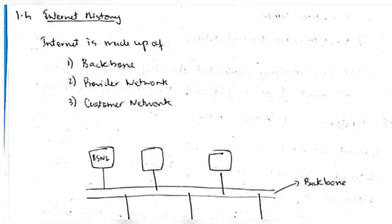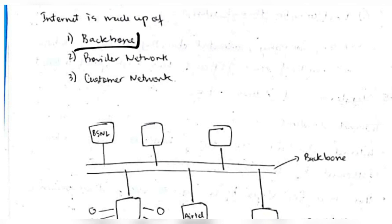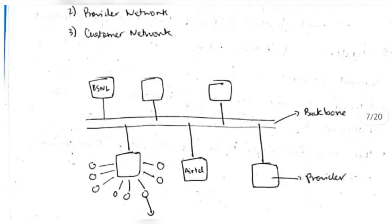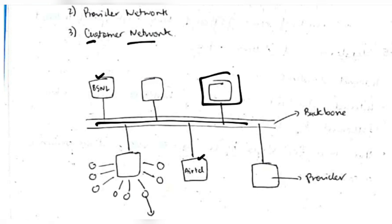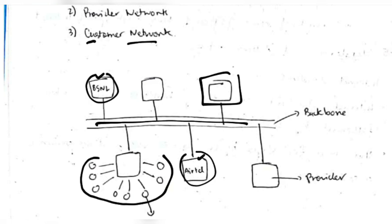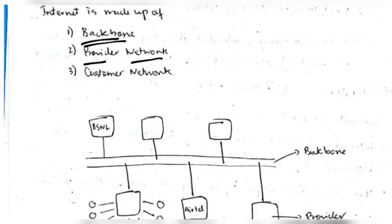The internet is made up of a backbone that carries all transmitted data. Provider networks, such as BSNL and ETL, take services from the backbone. Customer networks are the customers registered with network providers — we are the customers taking data from the provider network, while the backbone supplies data to the provider network.